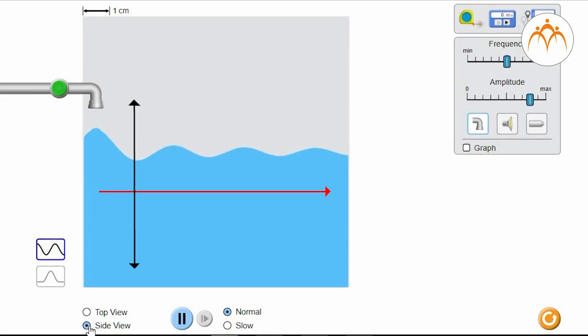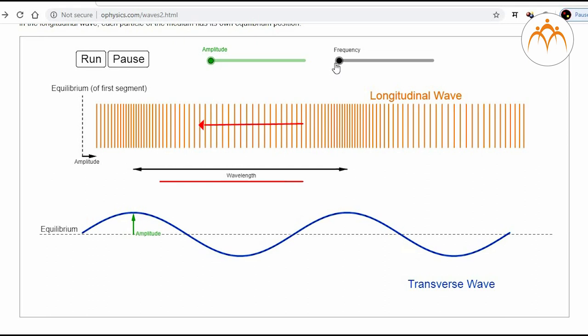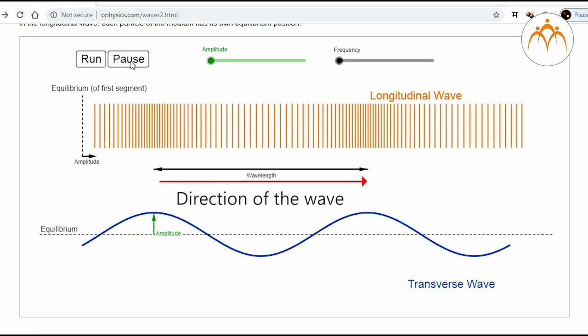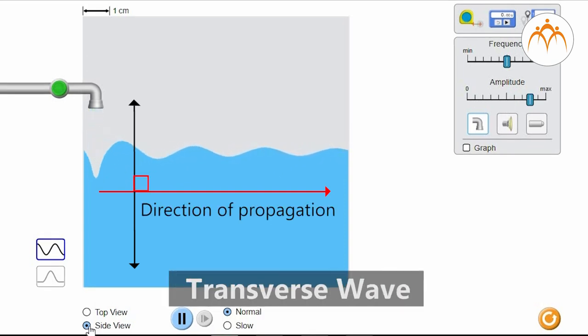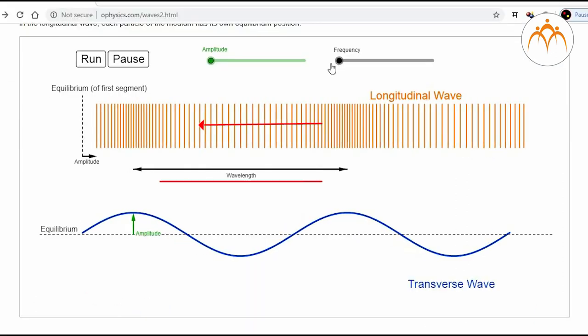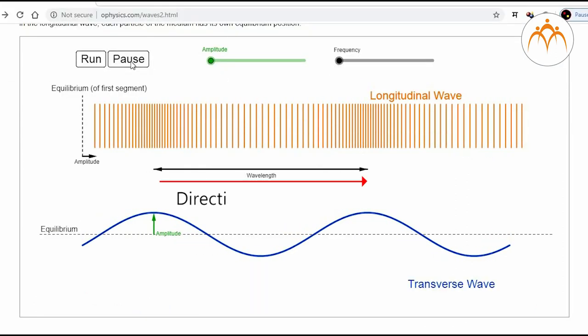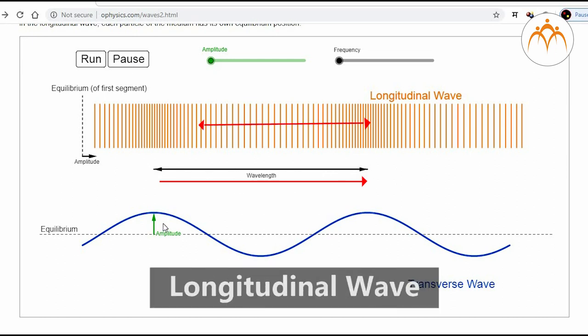In the case of water particles, its movement was perpendicular to the direction of propagation. In the case of air, it is parallel to the direction of the wave. When particles in the medium move perpendicular to the direction of the wave, it is called a transverse wave. When particles in the medium move parallel to the direction of the wave, it is called longitudinal wave.